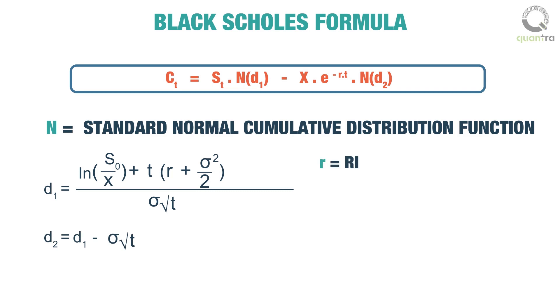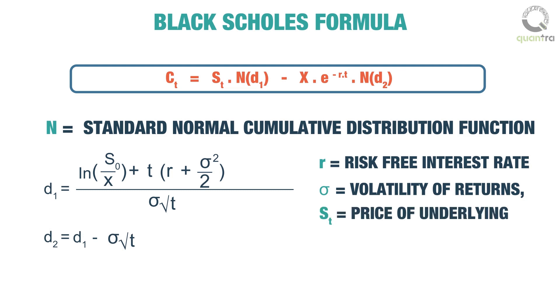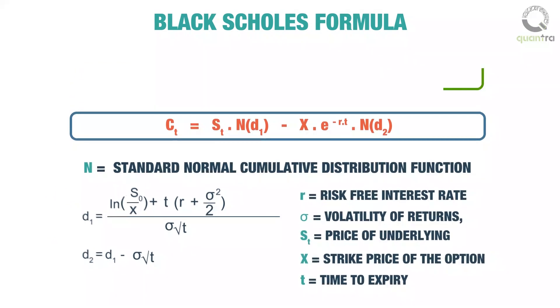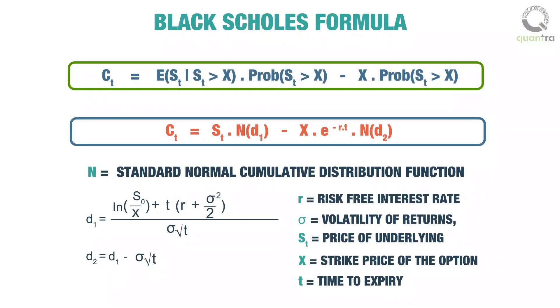r is the risk-free interest rate, sigma is the volatility of returns of the underlying asset, St is the price of the underlying, X is the strike price of the option, and t is the time to expiration. You can now compare the intuitive formula with the mathematical formula to see that intuitively we have understood the BSM model.